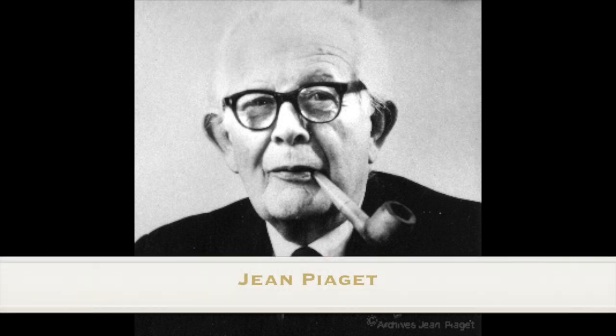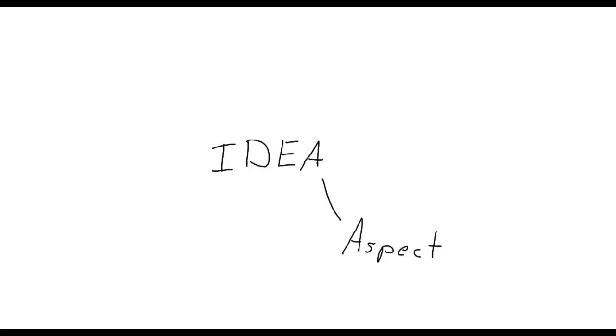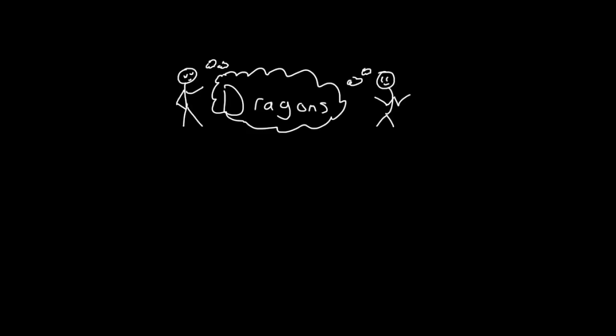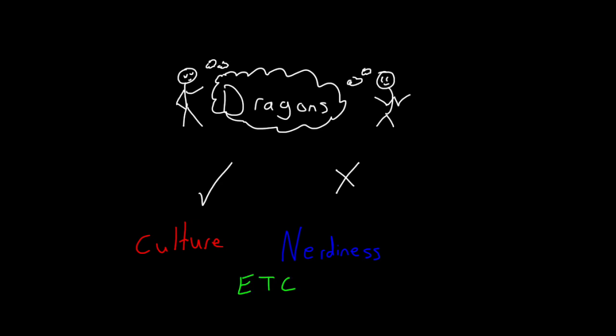So a couple weeks ago, we talked about a guy named Jean Piaget. In 1923, he applied the concept of a schema to the field of psychology. It's used to describe a group of ideas or actions that fit together. To understand how we think about schemas, let's take dragons as an example. Two people's schemas of dragons may be the same, or they could be very different depending on a variety of factors like culture, nerdiness, and so on.